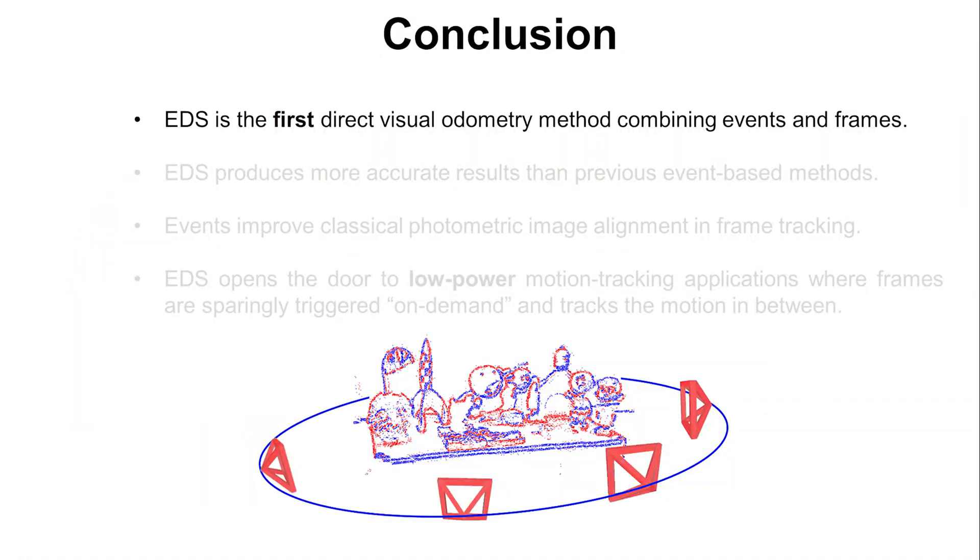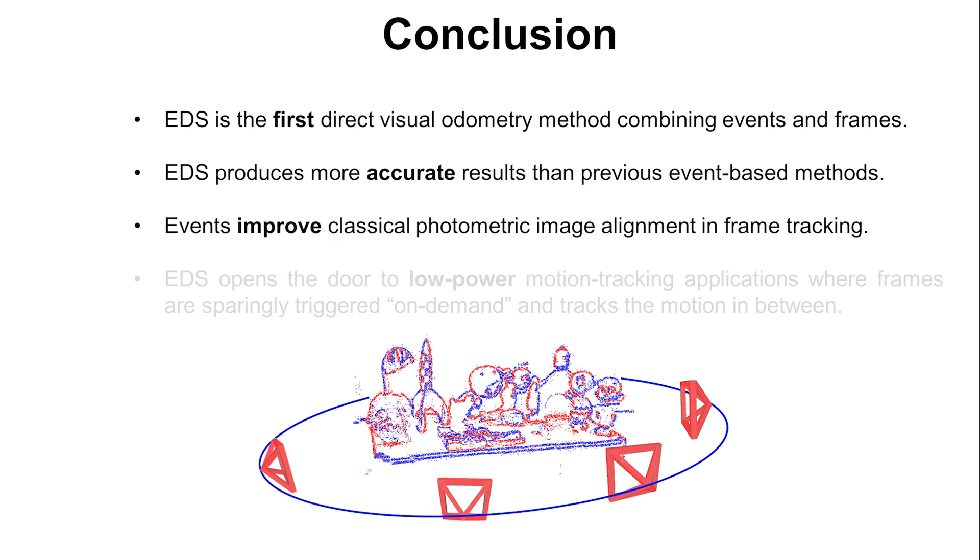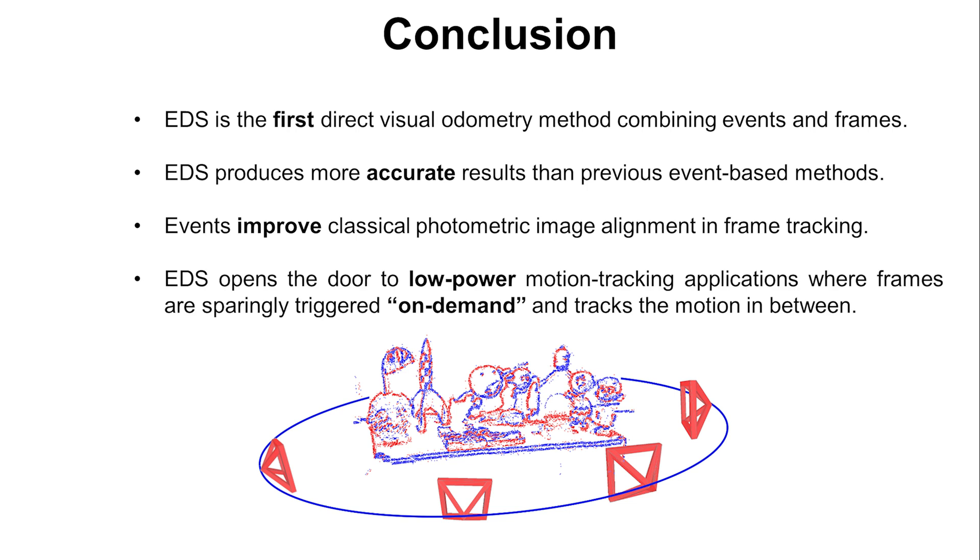In conclusion, EDS is the first direct visual odometry combining events and frames. The results are more accurate than previous event-based methods. Events improve classical photometric image alignment in frame tracking and open the door to low-power motion tracking applications where frames are triggered on demand.